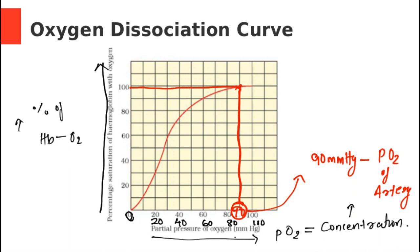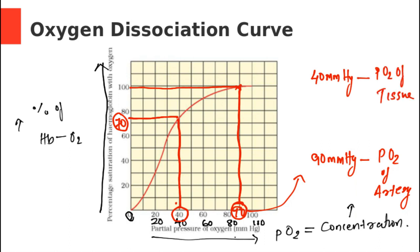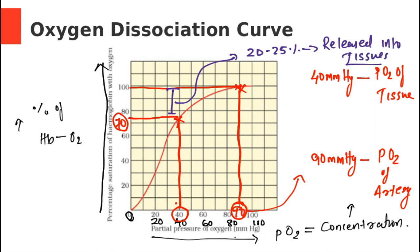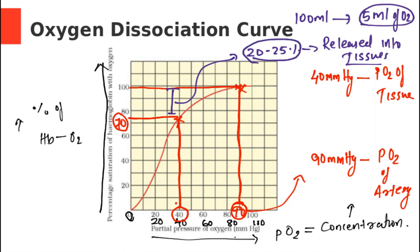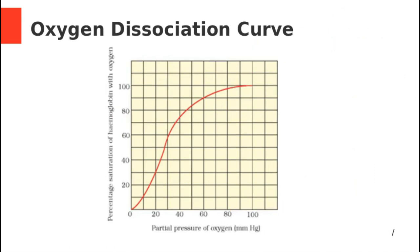The second value I am choosing is 40. At PO2 of 40, the hemoglobin saturation is about 70%. This 40 mmHg is the PO2 of the tissues. So when blood goes from arterial circulation to the tissues, there is a drop in percentage saturation of almost 20 to 25%. This released oxygen goes into the tissues for tissue metabolism. Our textbook says that 100 ml of blood delivers 5 ml of oxygen to the tissues, which represents 20 to 25% of the total oxygen present in the blood.